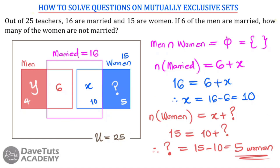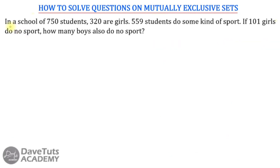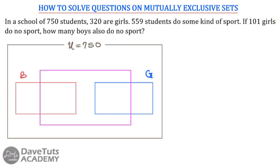Now let's check the second question. In a school of 750 students, 320 are girls and 559 students do some kind of sports. If 101 girls do no sports, how many boys also do no sports? Again, this is classical mutually exclusive sets — a person cannot be both a boy and a girl. The universal set is 750 students. Girls = 320, athletes = 559.